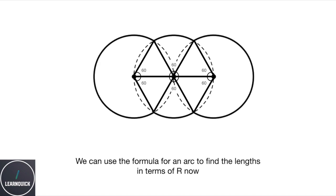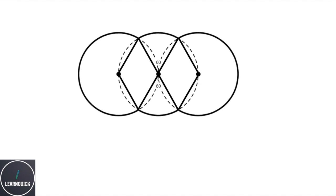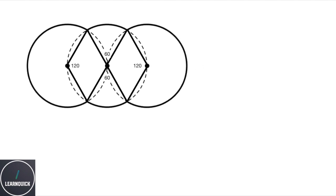So now we can use the formula for an arc to find the lengths in terms of r. We basically have two different shapes. I've labelled them one and two, but there's two times each. And this is the formula we're going to use to find the arc length.